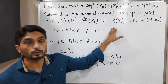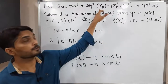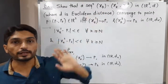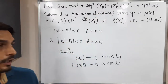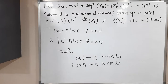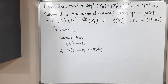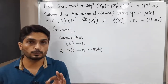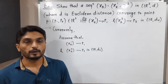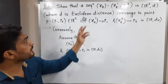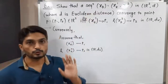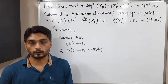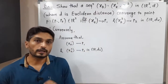Now conversely, we assume that xk1 converges to p1 and xk2 converges to p2, and with the help of that we have to prove that the sequence xk converges to point p. The target is that xk converges to p.